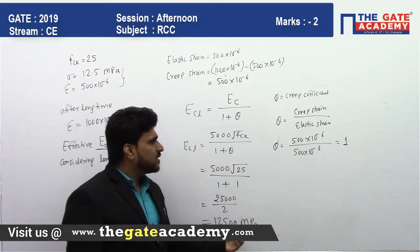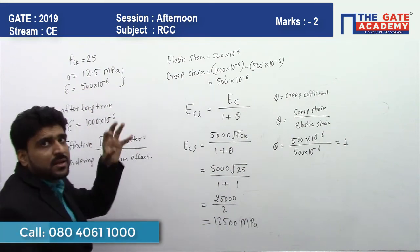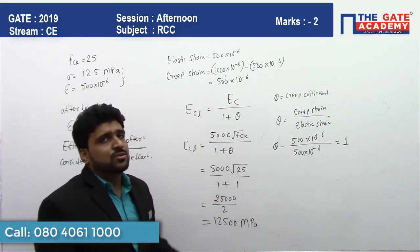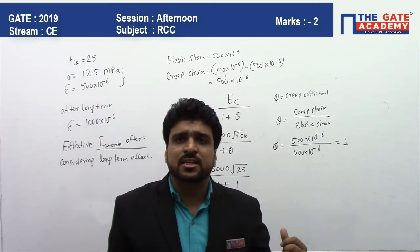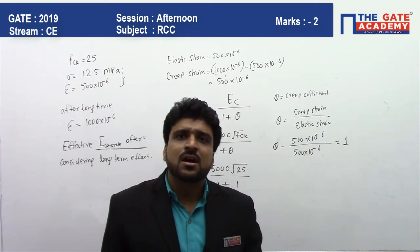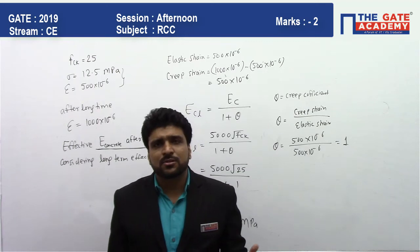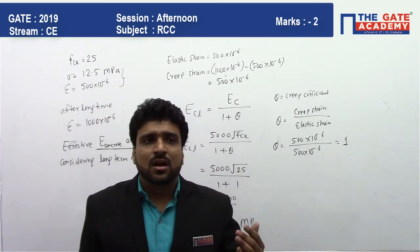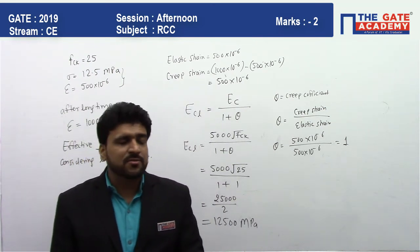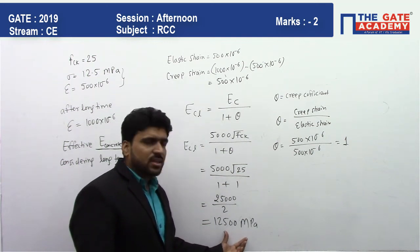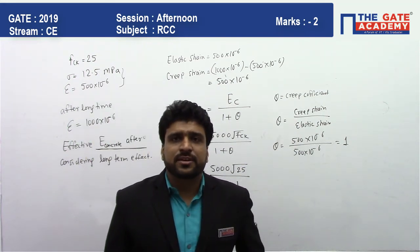The creep strain went from 500×10⁻⁶ to 1000×10⁻⁶, so the remaining amount is the creep strain. This two-mark question was straightforward. All RCC questions in the afternoon paper were from the introduction topic only — no analysis of singly or doubly reinforced beams. The answer is 12500 MPa. Keep watching the videos and please share with your friends. Thank you so much.